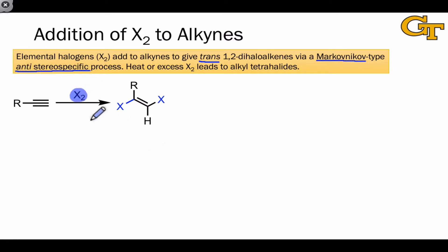We can see in this example reaction that the two atoms of X2 have added in an anti- or trans-fashion across the alkyne, leading to a transalkene product.